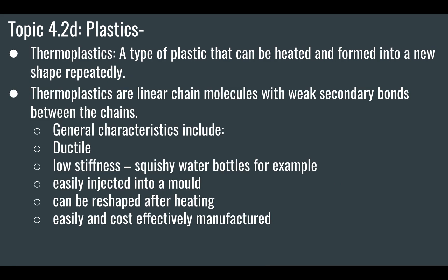There are a couple of types of plastics you need to know. One is a thermoplastic — 'thermo' means heat, and 'plastic' means something that can be bent and reformed. A thermoplastic is a type of plastic that can be heated and formed into new shapes repeatedly. If you think of 3D printers, that's exactly what we're using — a thermoplastic. We're melting the plastic and reforming it into something new. Thermoplastics have a linear chain with weak secondary bonds between the chains.